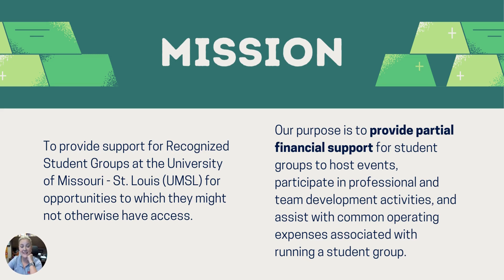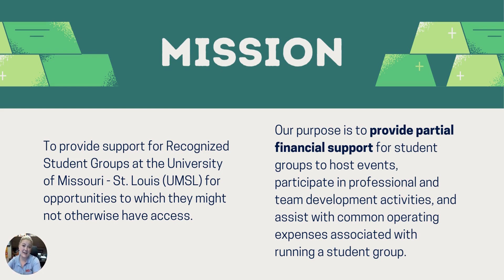It is not expected that a student group solely relies on SABC to fund all of their activities or team development, because we honestly just don't have the money for that. Historically SABC had about $200,000 a year to allocate, but that budget has been slashed significantly — now at most we have about $80,000 a year, $40,000 per semester — so it goes quicker than we'd hoped. We collect data to help make the case that the budget needs to be expanded or that we need different financial avenues for student groups.